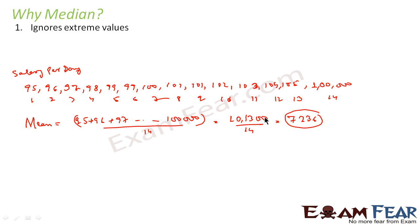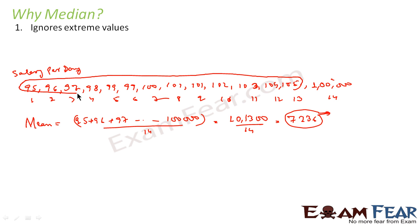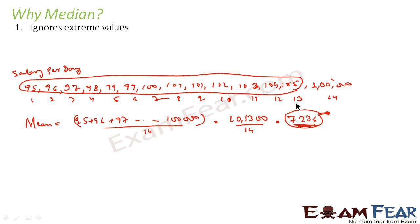Suppose a mobile company wants to launch a phone in this colony. They will assume the average salary is 7236 per day and launch a costly mobile phone — but the phone will flop. Because most of the people are in the 95 to 105 range. Because of this one extreme value, the whole data is now inconsistent. Such data is called skewed data — where most data is in one range and then you have extreme values. For skewed data, mean will not give you a clear picture. For such data, we need the median.